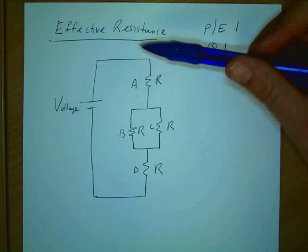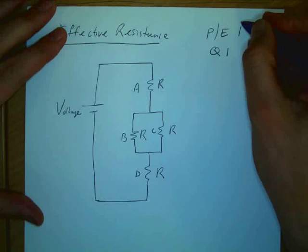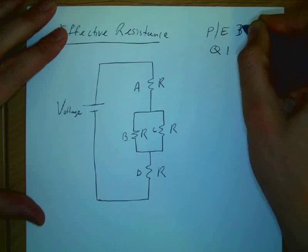Now we're told that we've got four resistors: A, B, C, and D. It's practice exam 3. Sorry, practice exam 3, Ethan. But it still remains question 1.